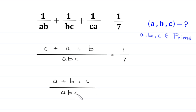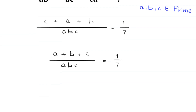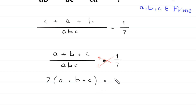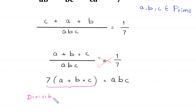This gives us (a + b + c) divided by a times b times c is equal to 1 over 7. Now we use cross multiplication — we multiply 7 by (a + b + c) and 1 by abc. So this becomes 7 times (a + b + c) is equal to abc.